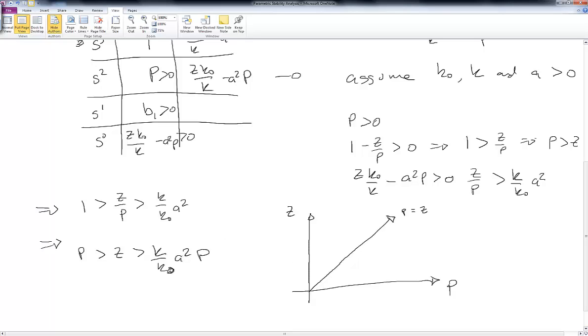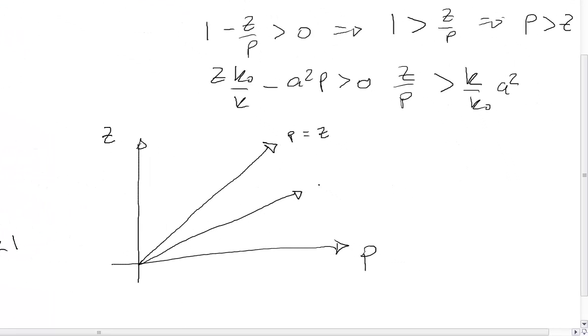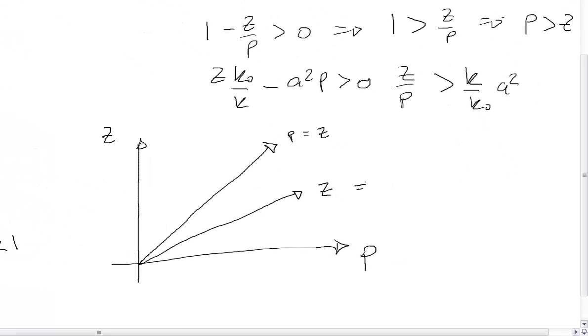And this other inequality is bounded by a line that has a slope K over K-naught times A squared. And notice this K over K-naught times A squared has to be less than 1 for this inequality to hold. So it's going to have a slope somewhere down here. So this is Z is equal to K over K-naught A squared times P. And then I can look at the regions of stability. For Z less than P, I can't be in this area, so I can scratch all that out. And for Z to be greater than K over K-naught A squared times P, I can't be in this region, so I can scratch all that. So this is our stability region.